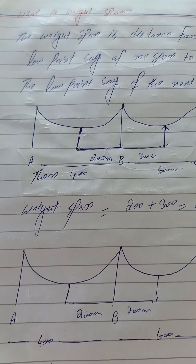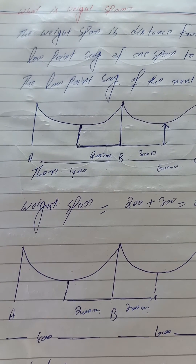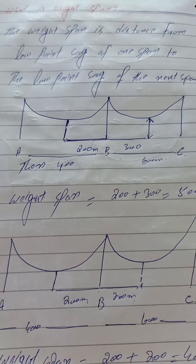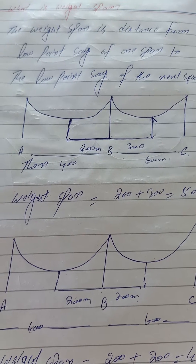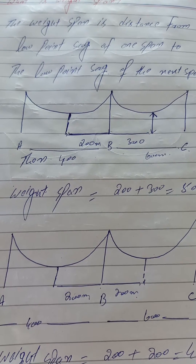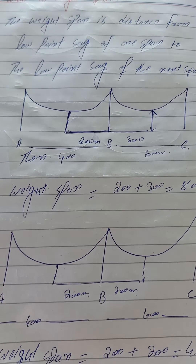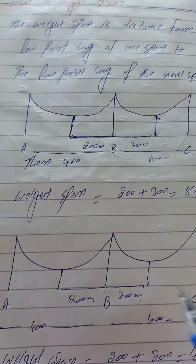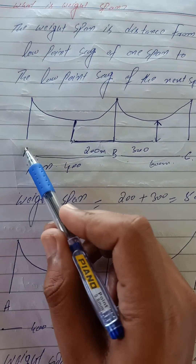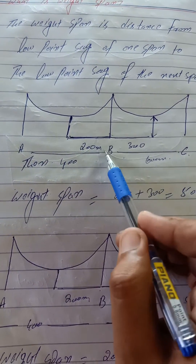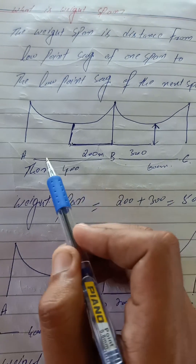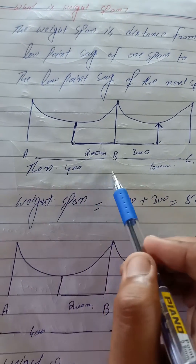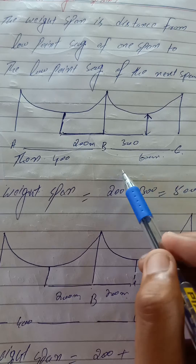The question is: what is the weight span? The definition of the weight span is the distance from the low-point sag of one span to the low-point sag of the next span. For example, we have three poles A, B, and C. Let's suppose the span of A and B is 400 meters and the span of B and C is 600 meters.